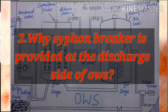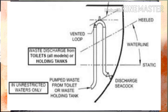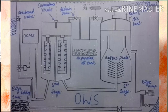The second question is: why is a siphon breaker provided at the discharge side of the oily water separator? The siphon breaker is provided at the discharge side. Assume that the oily water separator is stopped — it contains a mixture of oil with water, and we don't want that water to go out by itself. When the available head outside the separator is more, it won't allow the oil to go out from the OWS. But if the outside head is low, then oily water from the OWS can go out and pollute the environment.